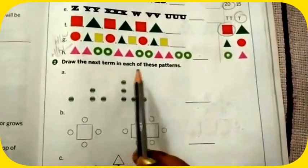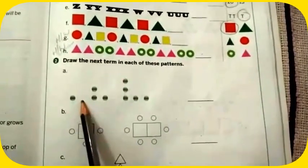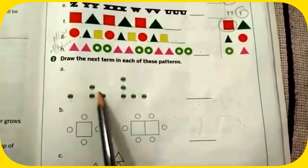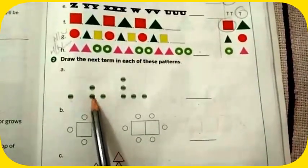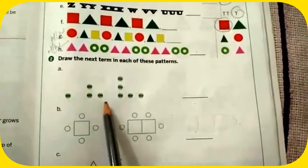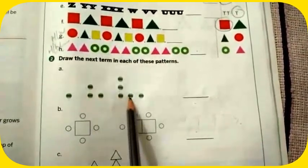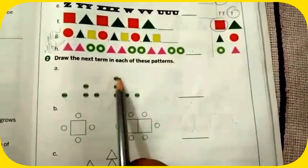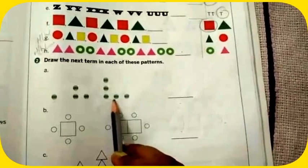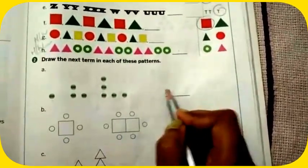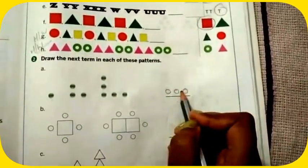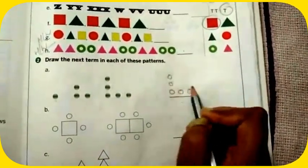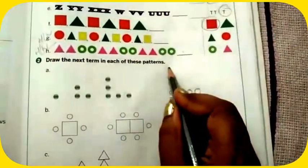Now see, draw the next term in each of these patterns. It's just like a marble. One here, you see one remains fixed on that side, or you can say on the horizontal line two, or on a vertical line two. Then these two remain fixed, another increases. These two remain fixed, another increases. So what will you do here? How many? Three. So one, two, three.